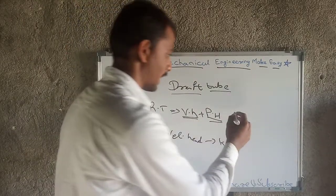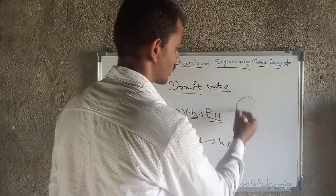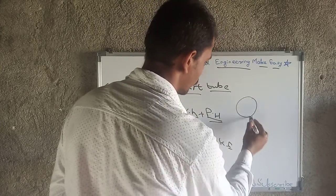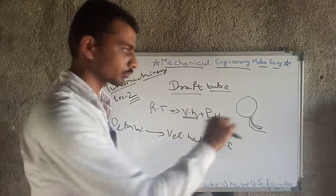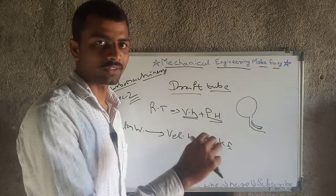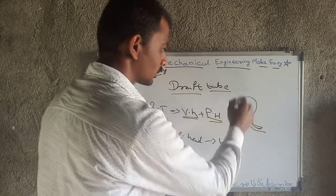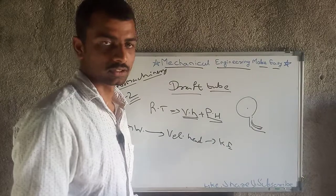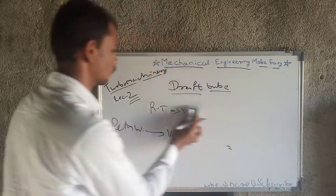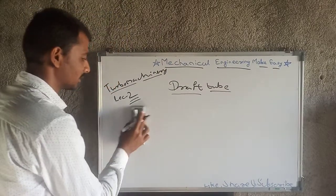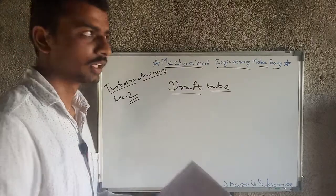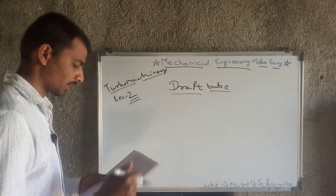At the exit of that Reaction Turbine, if we are not going to use the Draft Tube, then because of that, vacuum pressure will be created and the turbine failure may take place. That's why we are using the Draft Tube — a tube-like structure used for reducing the velocity and increasing the outlet pressure.